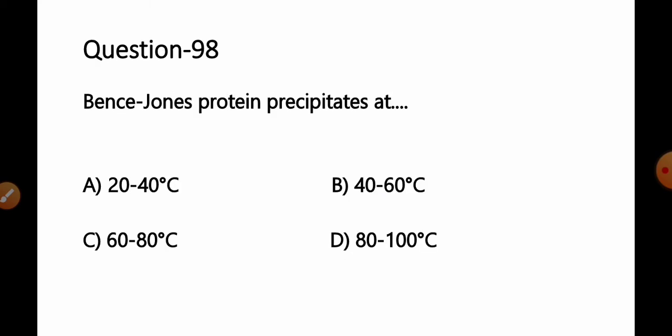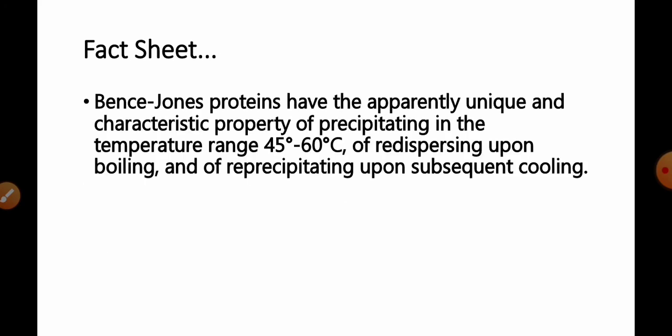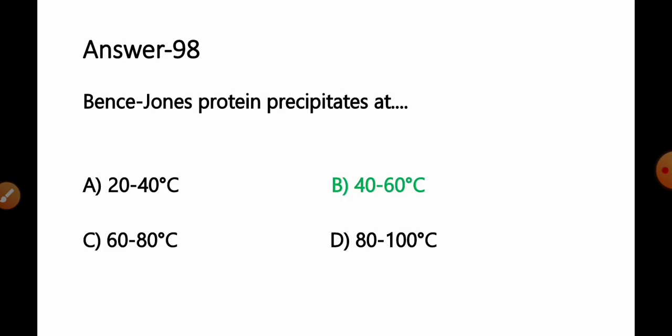Question 98: Bence-Jones proteins or BJ protein precipitates at: A) 20 to 40°C, B) 40 to 60°C, C) 60 to 80°C, D) 80 to 100°C. Fact: Bence-Jones proteins have the unique and characteristic property of precipitating in the temperature range from 45 to 60°C and re-dispersing upon boiling and re-precipitating upon subsequent cooling. Therefore, 45 to 60°C is the temperature where Bence-Jones proteins precipitate. Option B, 40 to 60°C, is the most appropriate and correct answer.